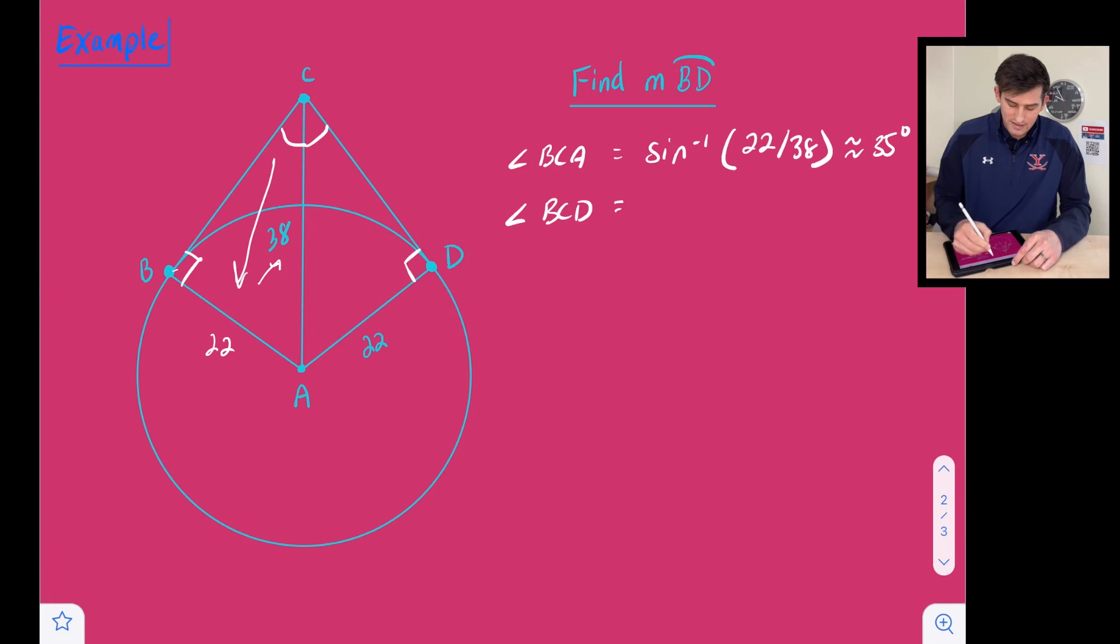So now if BCA is 35 degrees, so that would be right here, 35 degrees. Then we know the angle C or ACD is also 35 degrees. So we add those together and we get a measure of 70 degrees for angle BCD.